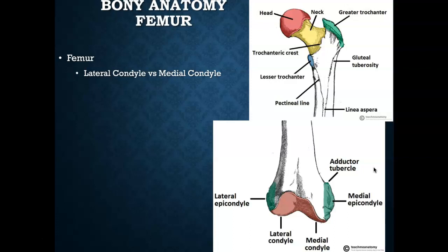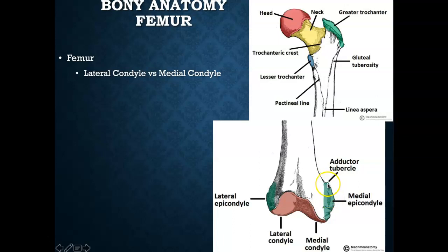Diving deep into anatomy, there are two key structures for the knee joint. In the upper right we have the top of the femur, which we'll cover with the hip. Most important for the tibial femoral joint is the distal femur. To orient: we have the lateral epicondyle, medial epicondyle, and the adductor tubercle — the distal attachment site for adductor muscles. More distally are the lateral condyle, the largest portion of the femur, and the medial condyle, which articulate with the tibia.